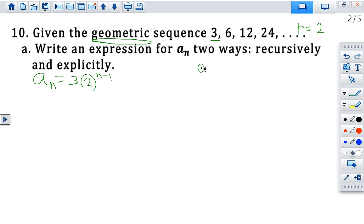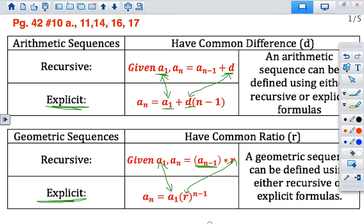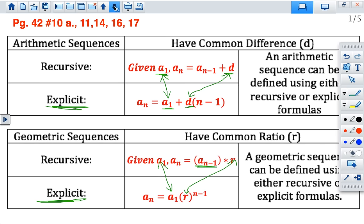Now, for the recursive formula, you have to say that a sub 1 equals 3. You have to give us the first term. And then go ahead and give us the equation. So a sub n is equal to the previous term, a sub n minus 1, times the common ratio, which is 2. All right, so that was just one example for a geometric.